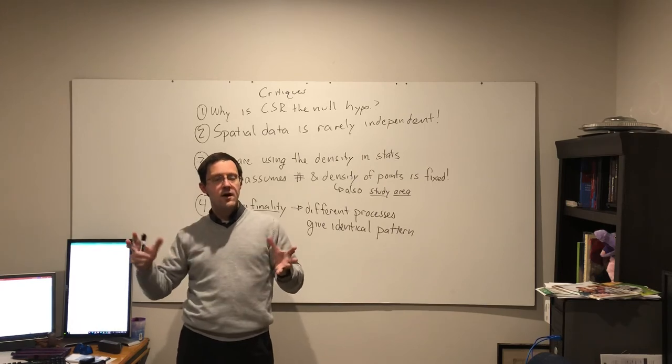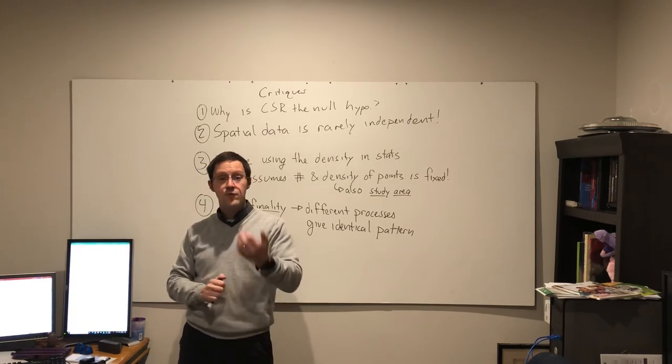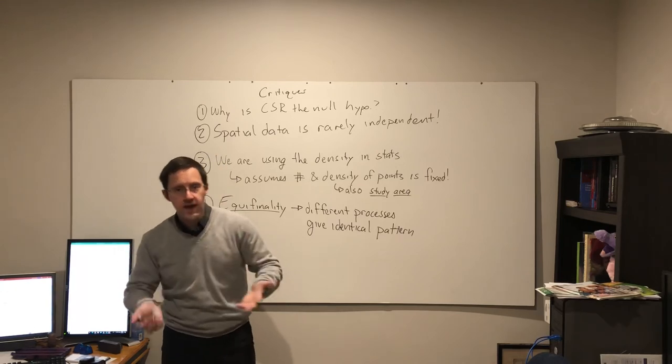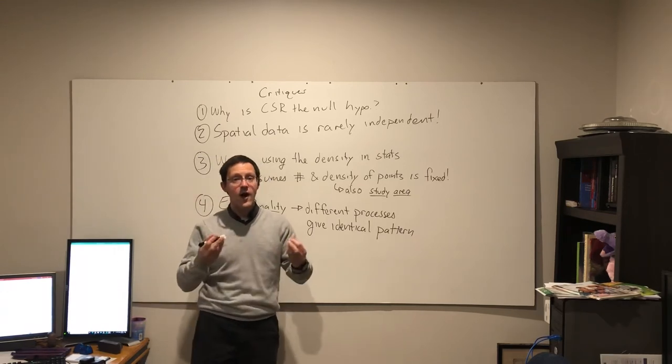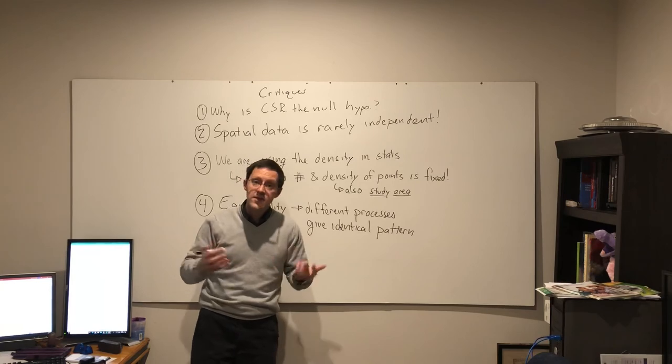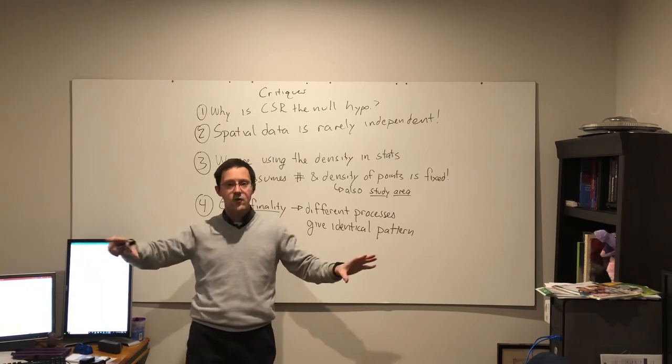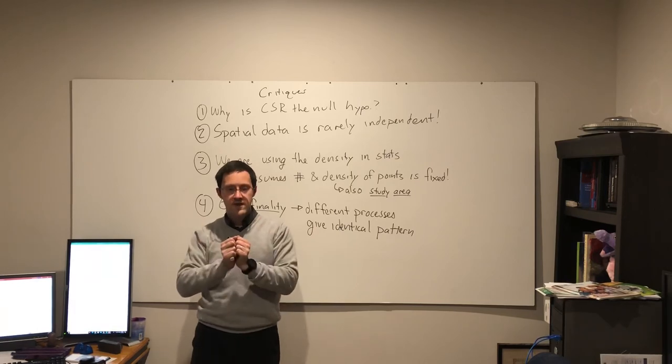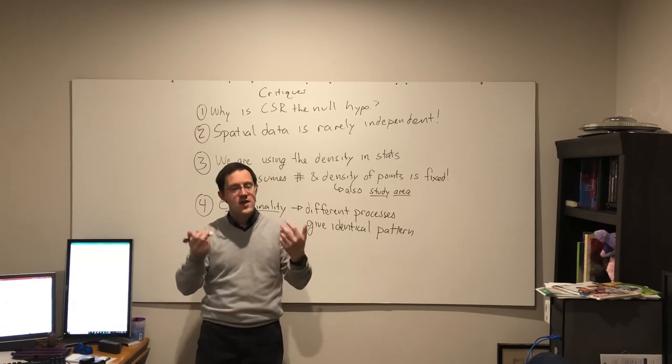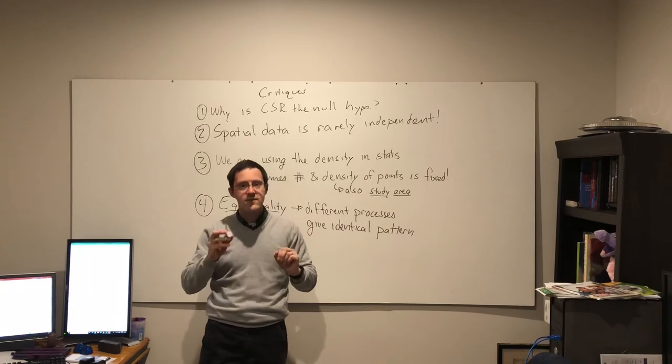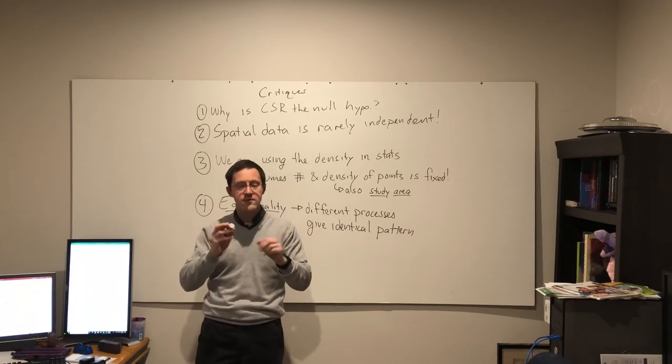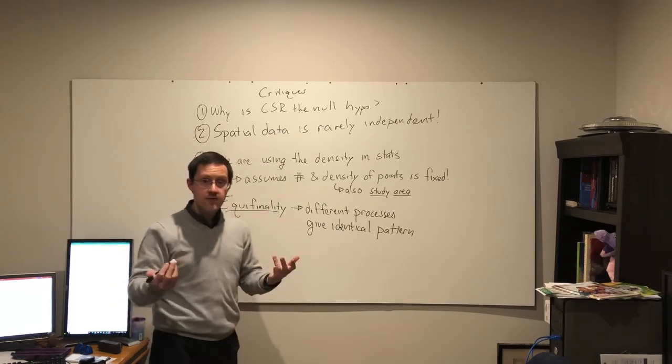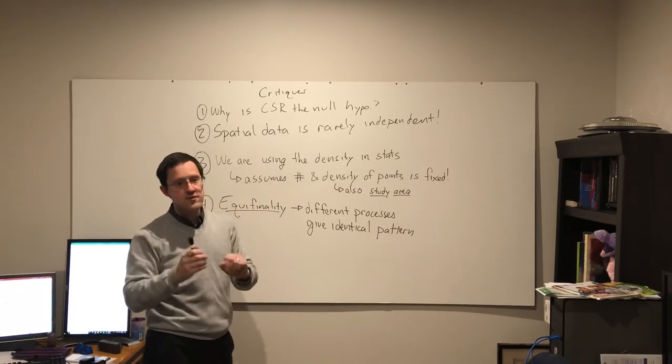The only way around this is to bring in additional data, where now I'm looking at the biology of that tree, how it works, and that may help me disentangle between those different possible hypotheses. Bringing in outside information can resolve this, but if all I have is the statistic itself, I cannot fix it. I cannot resolve it.